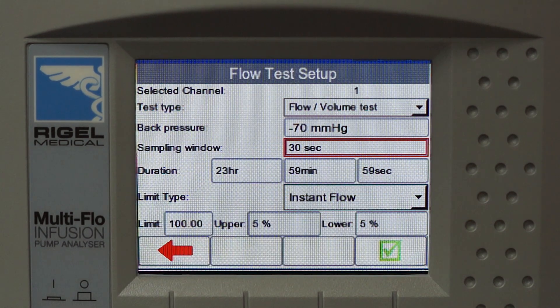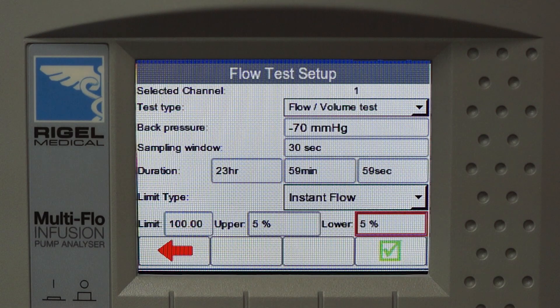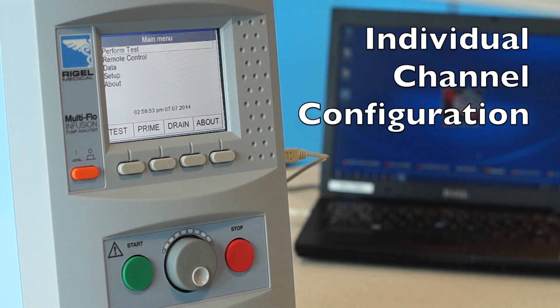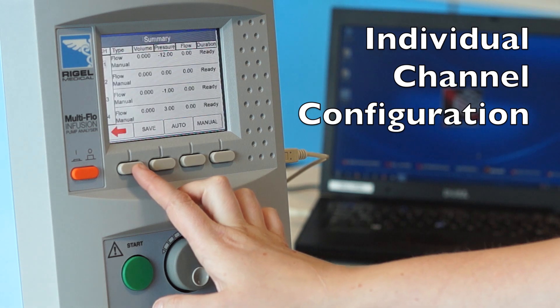The Multiflow's internal pressure regulation can simulate a wide range of back pressures to meet the requirements of IEC 60601-2-24. The Multiflow allows individual setups of each channel to run tests in either a manual or fully automatic configuration.